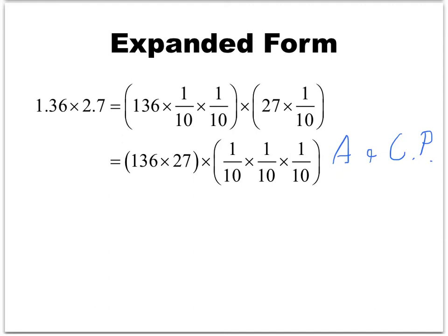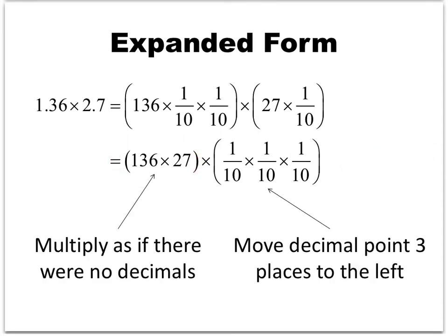Taking a step back, we can see what each part of the rearranged expression means. The first term shows our original numbers without decimal points — that's step one: multiply as if there were no decimals. The second part multiplies by 1 tenth three times, which means moving the decimal point three places to the left — that's step two. So step one comes from the first term, and step two comes from the three factors of 1 tenth.